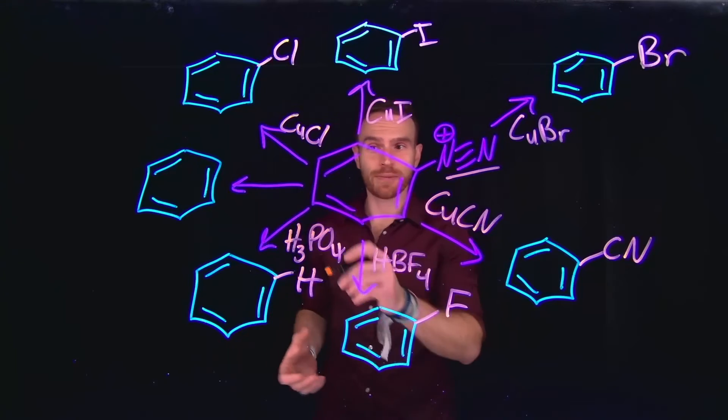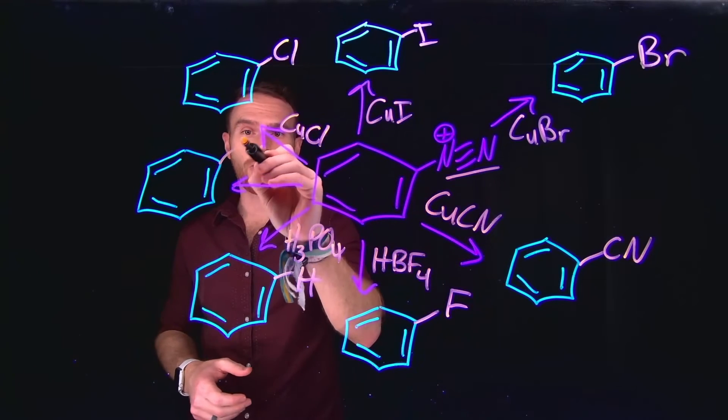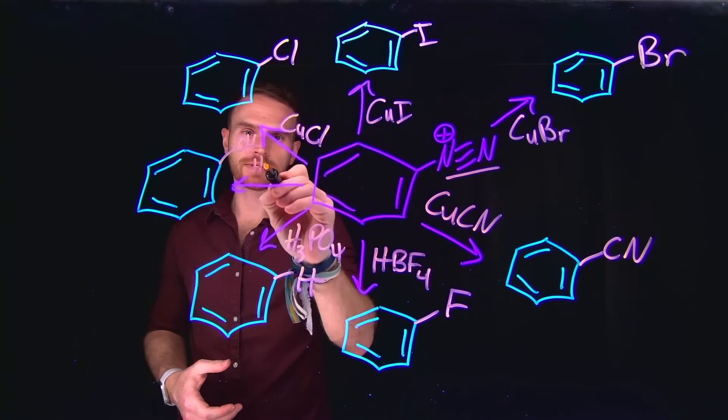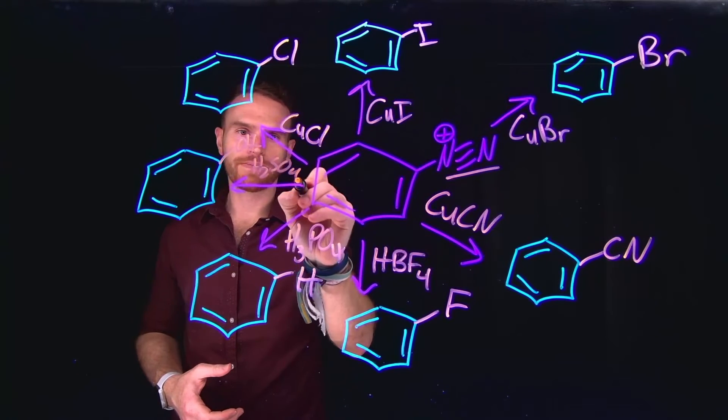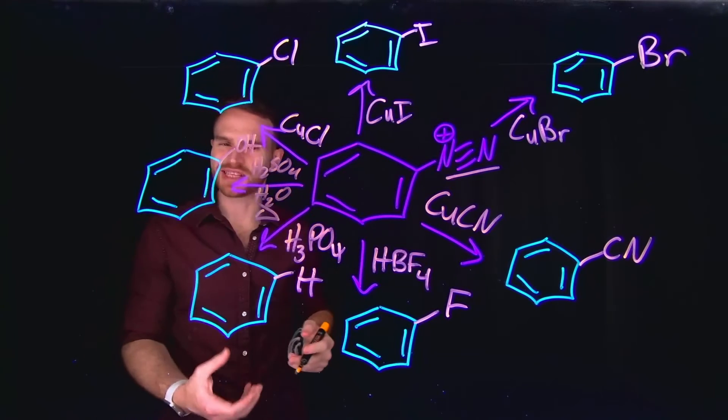And then the final example that I want you to consider is the fact that we can exchange this diazonium salt for an alcohol. And we do this by using the conditions of using sulfuric acid, H2SO4, in water with a little bit of heat, which I'll indicate with the delta symbol.